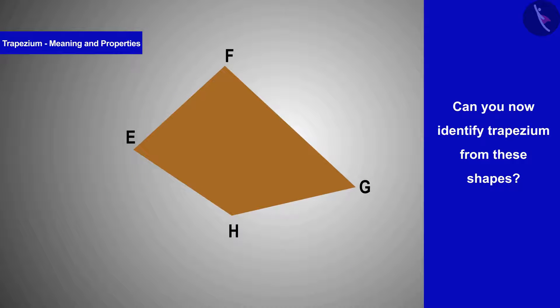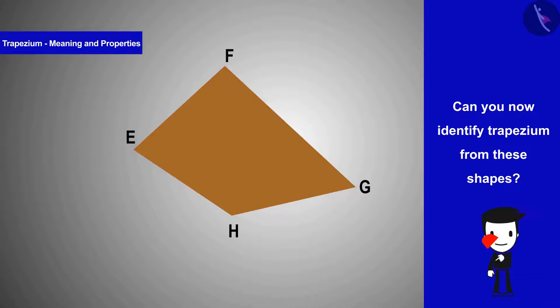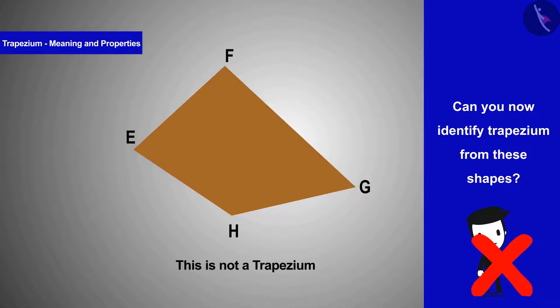The brown figure has no pair of parallel sides, so it will not be a trapezium.